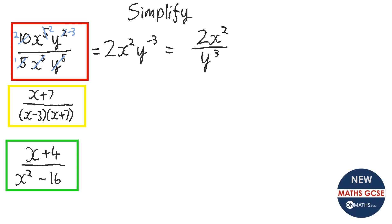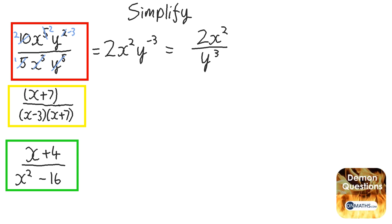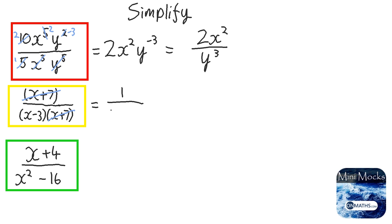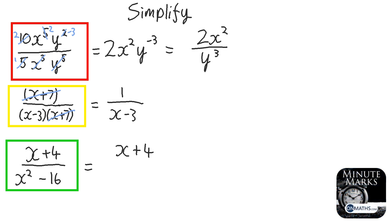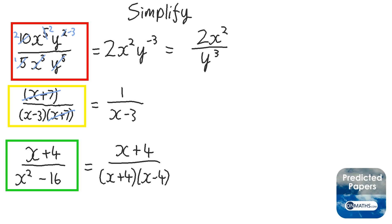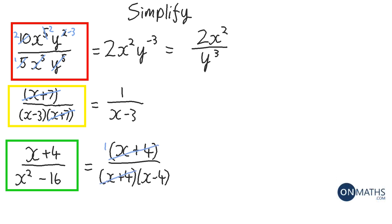Let's have a look at the next one. Don't forget we can put brackets around the numerator or denominator. I'm going to cross off x plus 7, leaving 1 at the top and x minus 3 at the bottom. Last one: I can't divide the top by anything yet until I factorise the bottom. It's a difference of two squares, so that's going to be x plus 4 times x minus 4. I put brackets around the top to remind me I can cross them out, and that equals 1 over x minus 4.